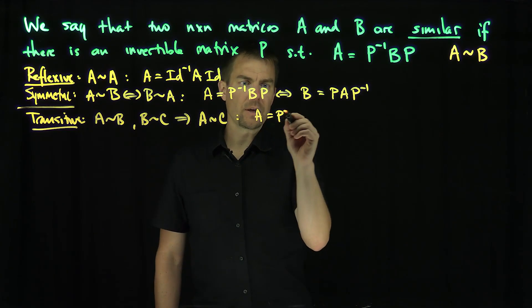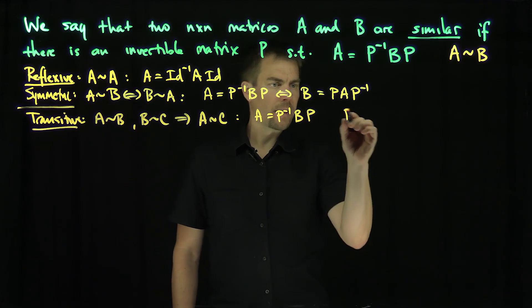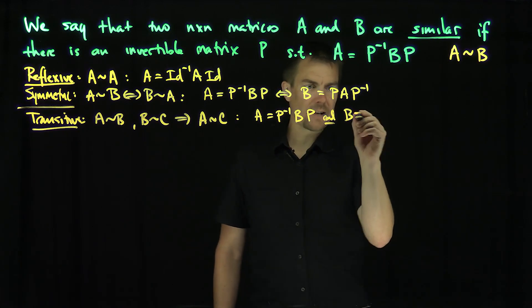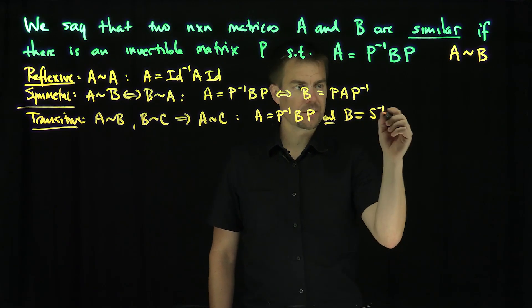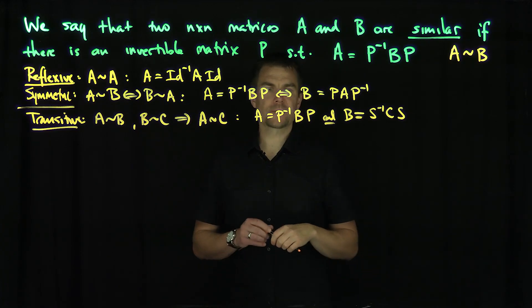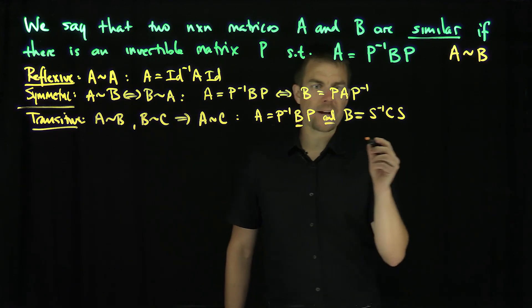If A is P inverse B P, and B equals S inverse C S, then what can I say about A and C together? Well, I can replace this B with that expression. So by combining these things,